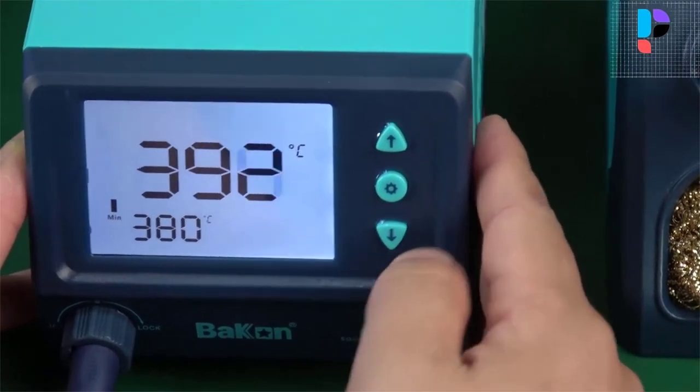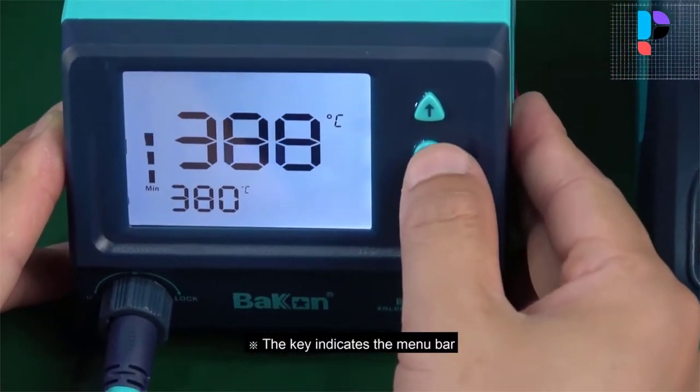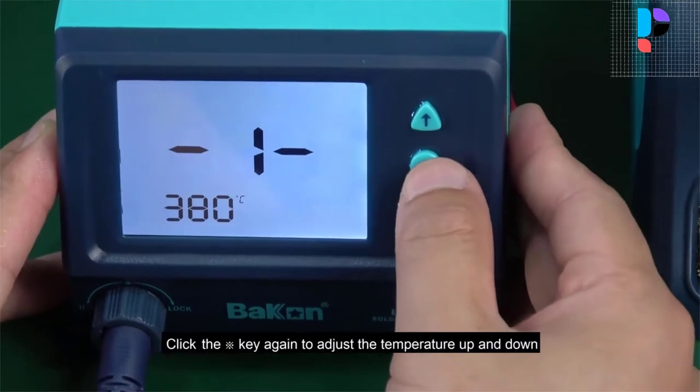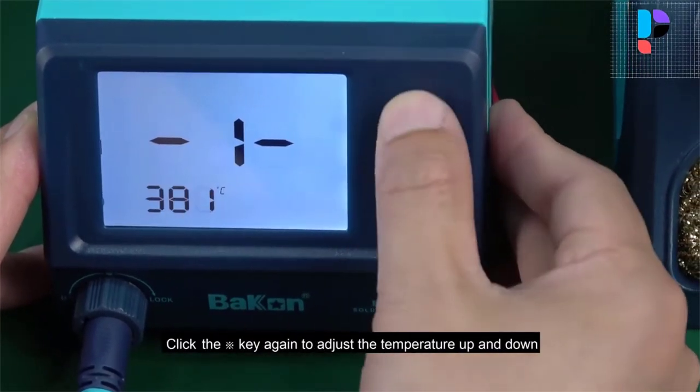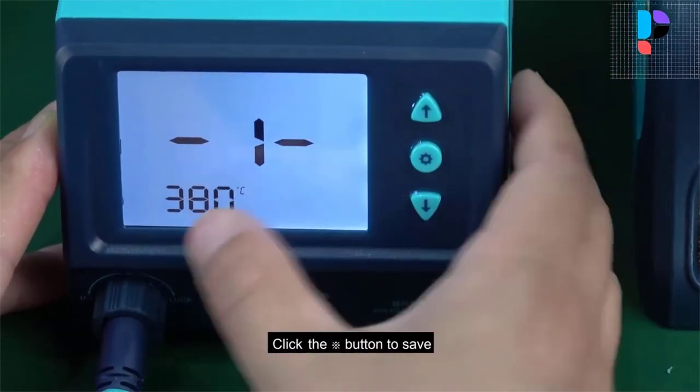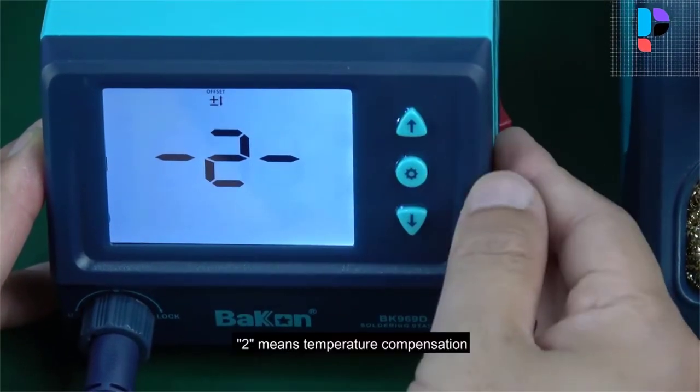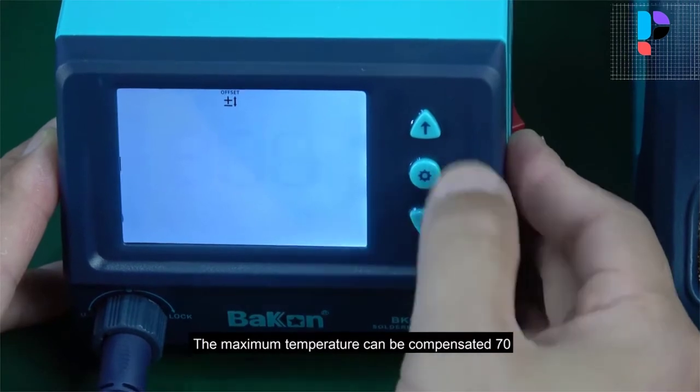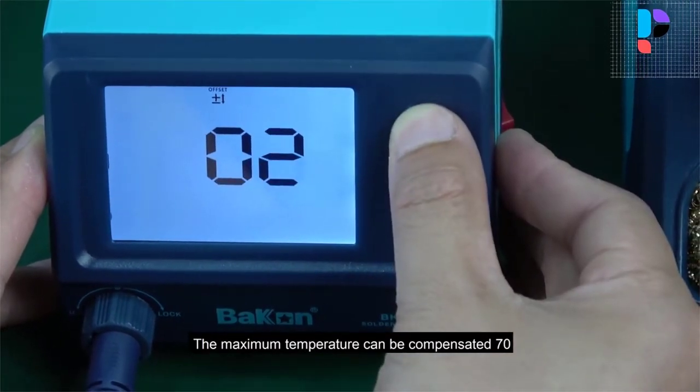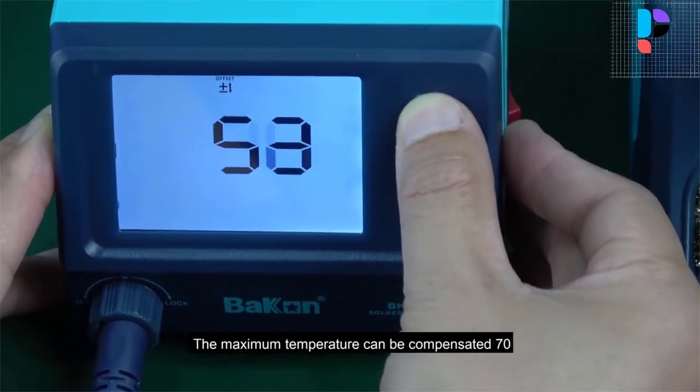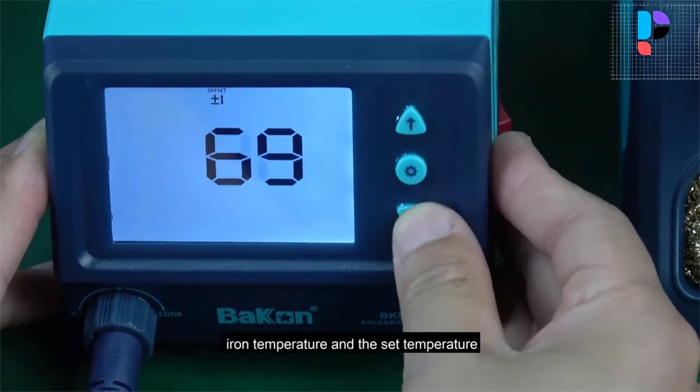The soldering station adopts aviation foolproof socket, which has good contact and high stability. Auto standby and sleep mode can effectively extend the service life of the soldering iron and avoid harmful accidents.